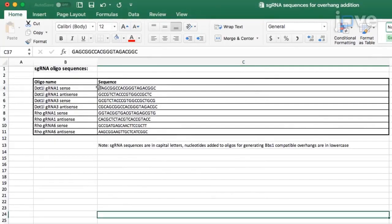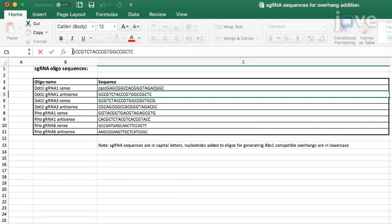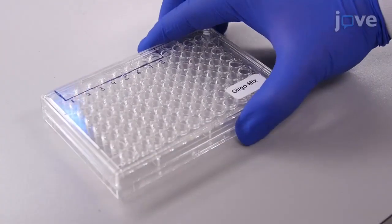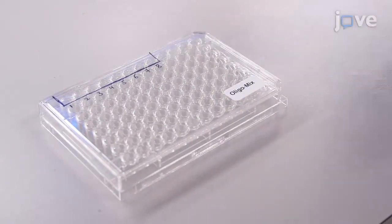For cloning in the desired single-guide RNA expression plasmid, prepend the nucleotides CACC to the sense oligonucleotide and AAAC to the reverse complementary antisense oligonucleotide. Premixed sense and antisense oligonucleotides are then ordered from a company in a 96-well plate labeled oligomix.